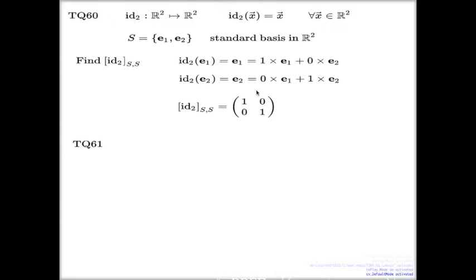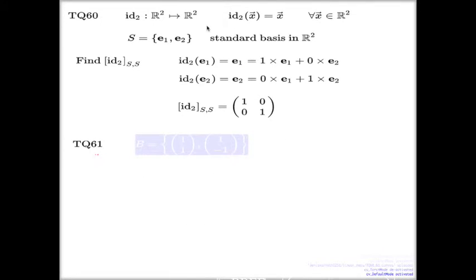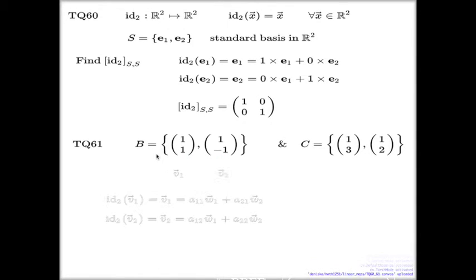Question 61 looks at the same identity map between two planes, but with a different set of bases. The first basis B has two vectors V1 and V2, and the second basis C has two vectors W1 and W2. The question asks: what is the matrix of the identity map with respect to the couple of bases B and C, rather than S and S?